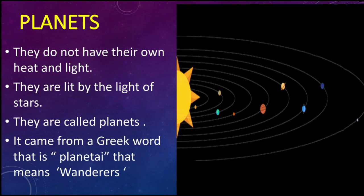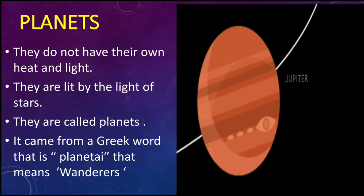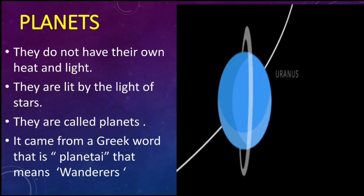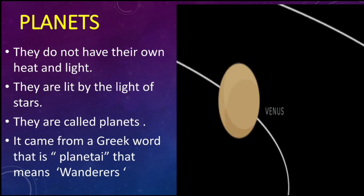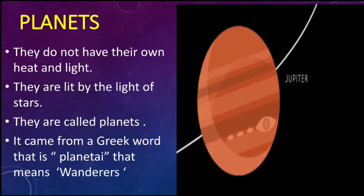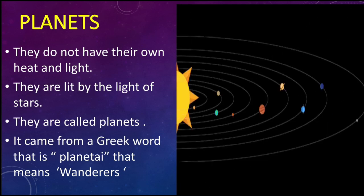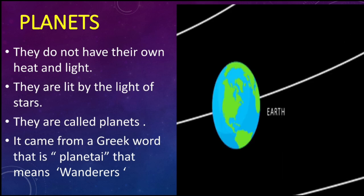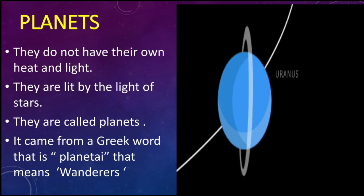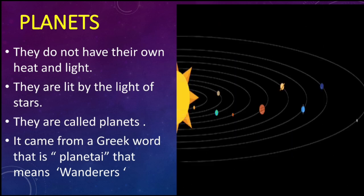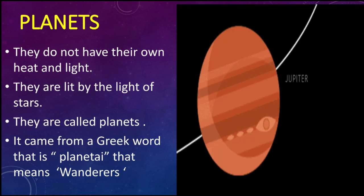Now we come to the next celestial body: planets. Planets do not have their own heat and light — they are lit by the light of stars. The word 'planet' comes from a Greek word 'plantae' meaning wanderers. As we all know, there are eight planets. Among them, Earth is also one of the planets in the solar system — it is the planet where we live.